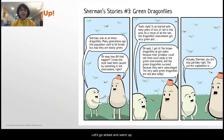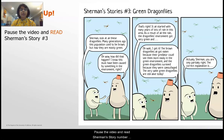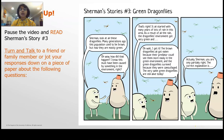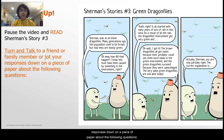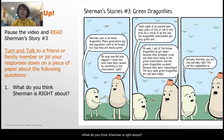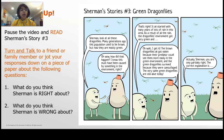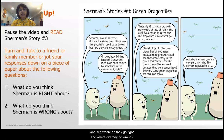Let's go ahead and warm up. Pause the video and read Sherman Story number three right here on the right-hand side. Turn and talk to a friend, a family member, or jot your responses down on a piece of paper about the following questions: What do you think Sherman is right about? And what do you think Sherman is wrong about? Carefully read the dialogue between the two characters and see where they go right and where they go wrong.